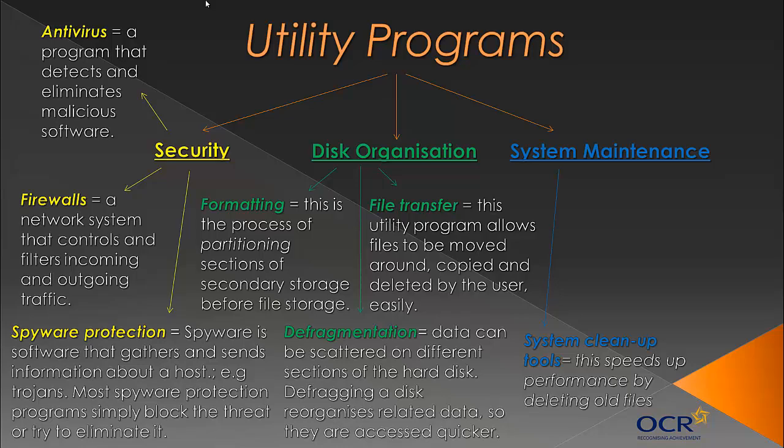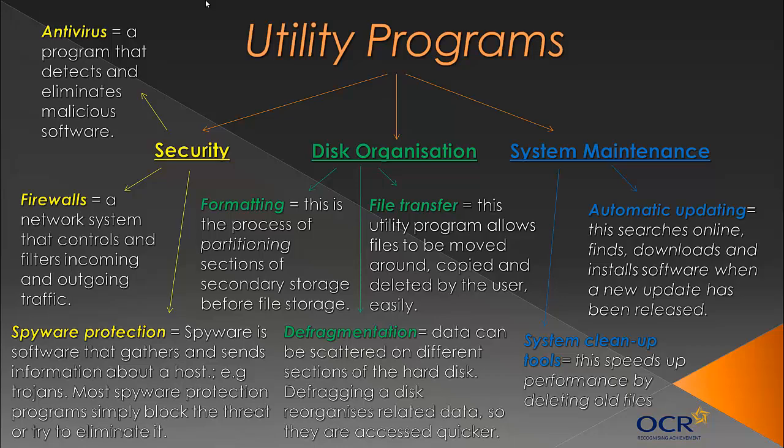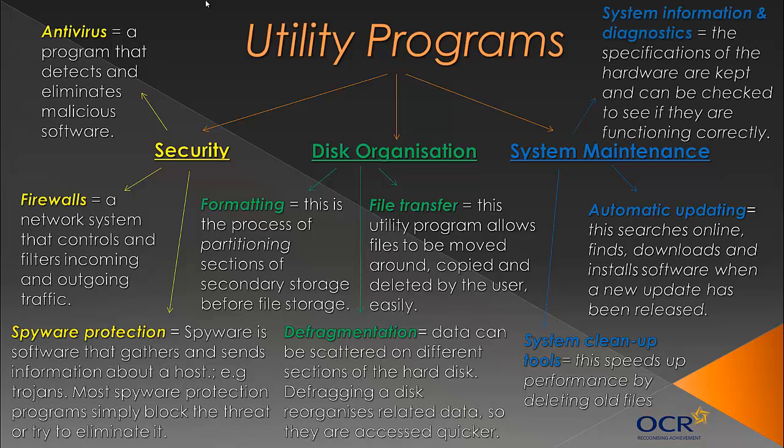Looking at system maintenance, there are system cleanup tools — programs that speed up computer performance by deleting unused files, including leftover files from programs that weren't removed properly. This cleans your computer and improves performance. There are also automatic update programs, installed automatically on your computer. For example, Windows has an automatic update program, and iTunes always prompts updates too. These programs search online, find, and download new software updates — if a developer releases an update, they'll automatically find it, download it, and maybe even install it for you.